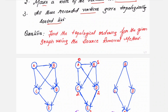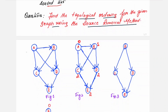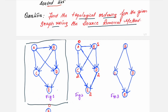Now, find the topological ordering for the given graph using the source removal method. The graph has 5 vertices. For the source removal method, we only need to know the in-degree of each vertex — out-degree is not required — because we delete the vertex with in-degree 0.